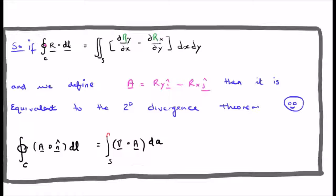So there is a bit of a proviso, there is a bit of a caveat, but nonetheless, Green's theorem is equivalent to the two dimensional divergence theorem.